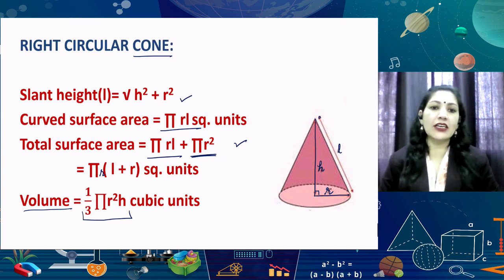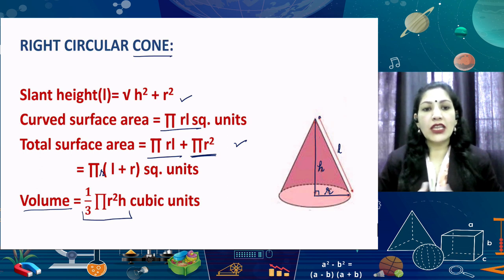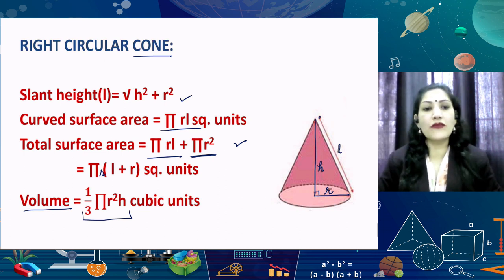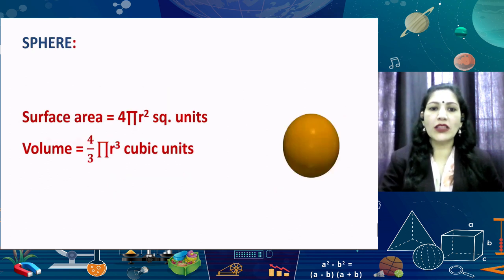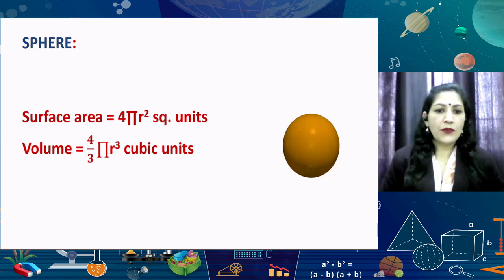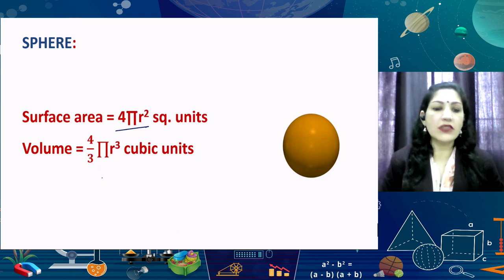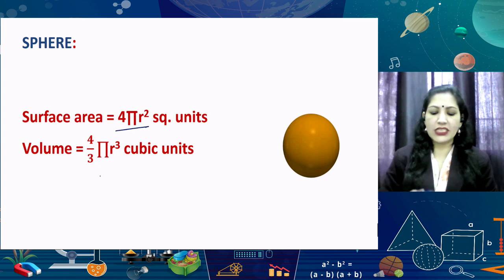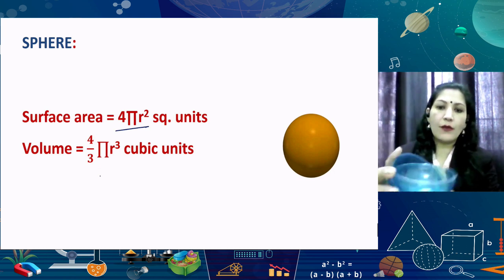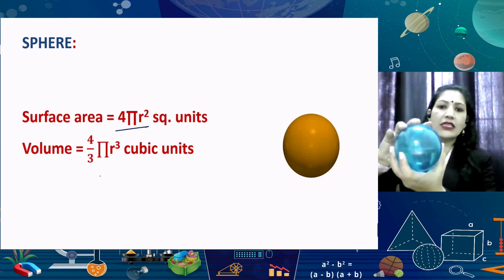In class 9, we studied that if we fill a cylinder up to the brim with any material and then fill the cone of the same height and radius, three cones fill the cylinder. So the volume of the cone is one-third that of the cylinder. Then, about a sphere — the surface area of a sphere is 4πR². There is no distinction between curved surface area and total surface area here, because the entire sphere is curved. There is no plain portion. Therefore, the surface area of a sphere is simply 4πR².